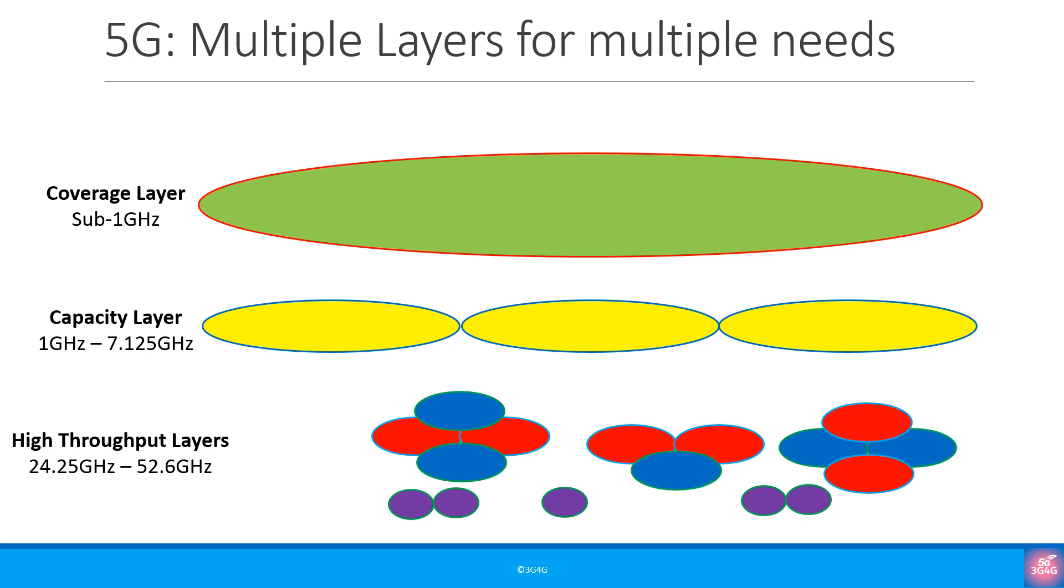The reason this upper limit is specified for the capacity layer is because 3GPP has defined this as an upper limit in the frequency range 1 or FR1. The high throughput layers are frequencies from 24.25 GHz to 52.6 GHz.